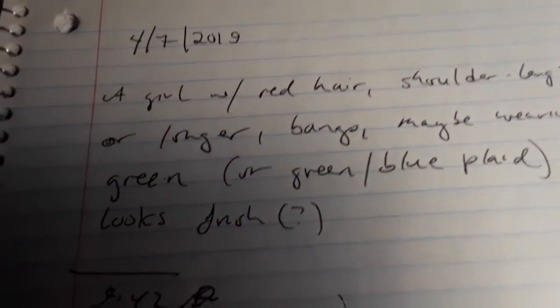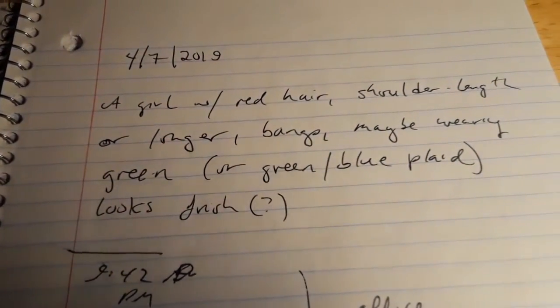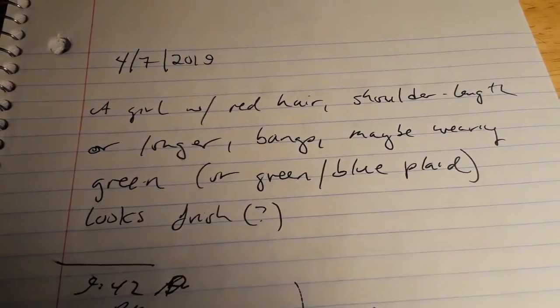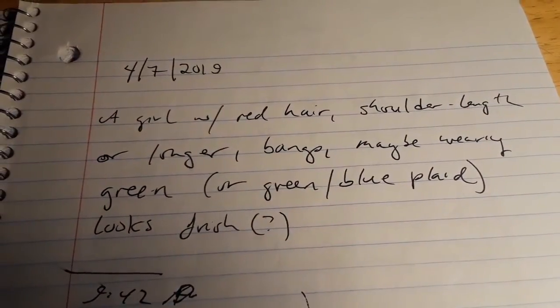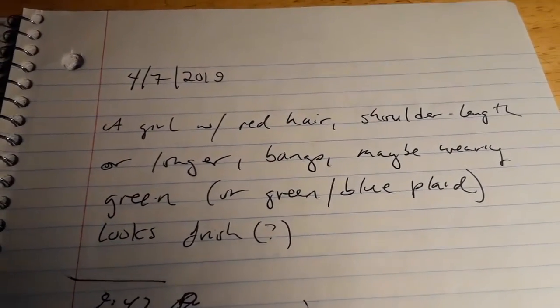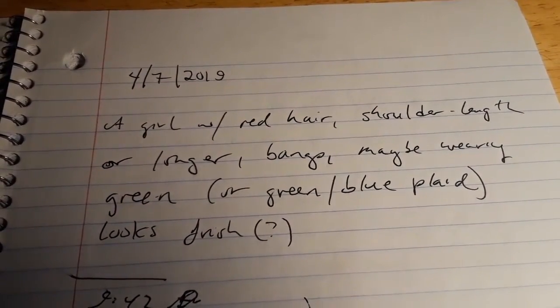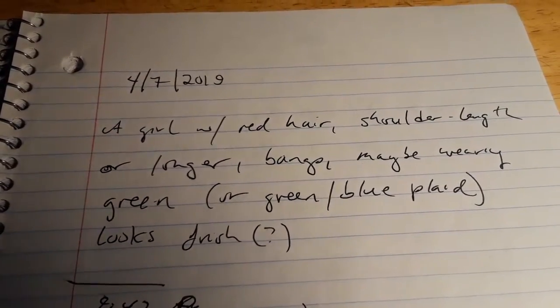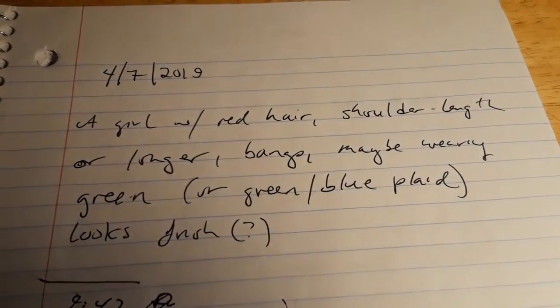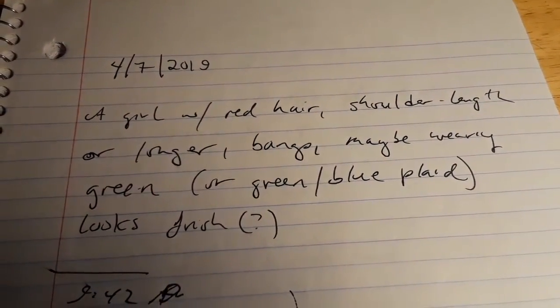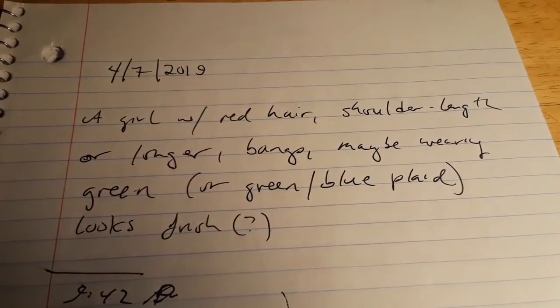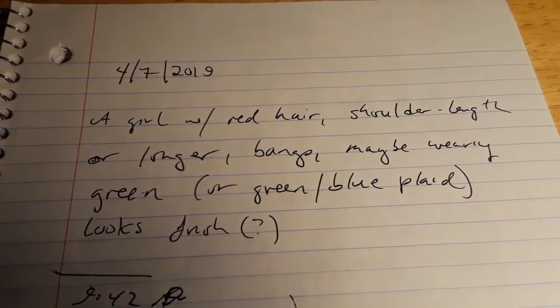On the night of April 7th, I got this brief image. Part of me wants to just not even write something like this down because it's so bizarre and out of nowhere, but the fact that it is bizarre and out of nowhere and brief and flickering means that maybe there's something to it. Like why would this come to you? This is sort of like right before I'm trying to go to sleep, and then I see this flicker of an image. This is a girl with red hair, shoulder length or longer, straight red hair, bangs, maybe wearing green or green-blue plaid, looks Irish.